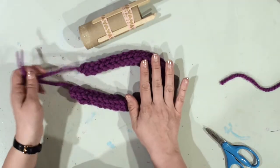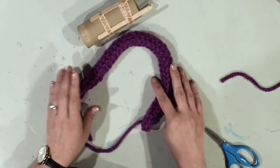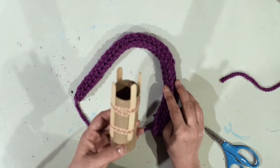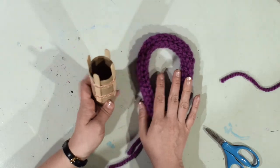It could be a bracelet, necklace, headband - you can make it even shorter, make like a keychain, something like that. And you still have your spool that you can create other knitings on as well using different colors if you have more yarn available.